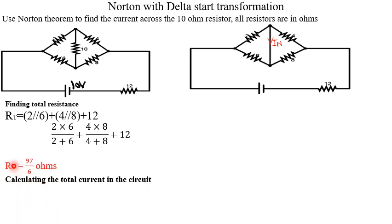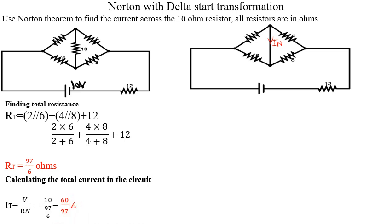We get our total resistance as 97/6 ohms. Since we found the total resistance, we now need to find the total current — the current delivered by the 10-volt source. It becomes total voltage divided by total resistance, giving us 60/7 amps. So the total current IT equals 60/7 amps.